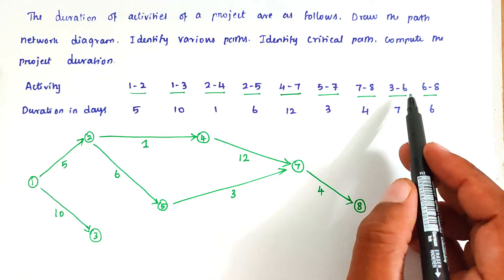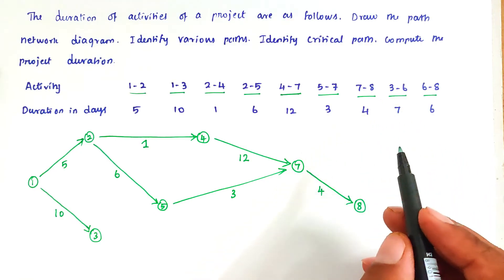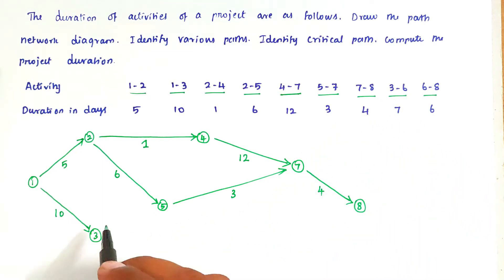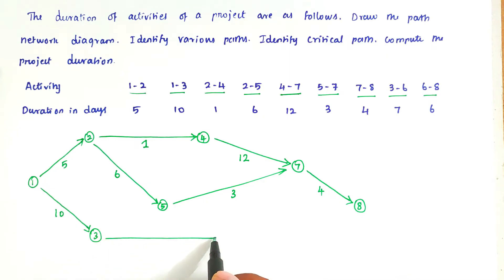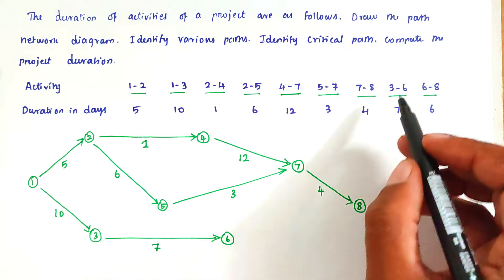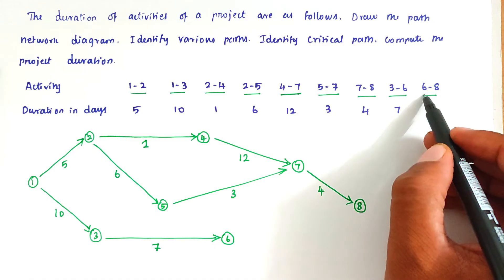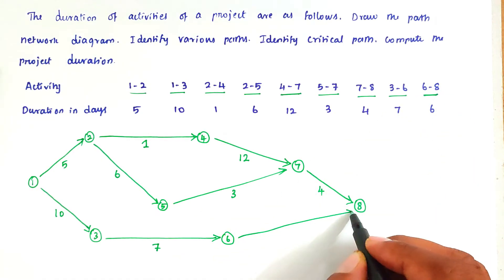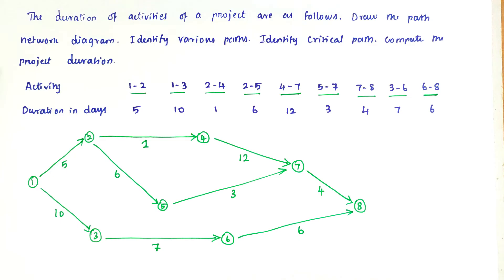Next, activity 3 to 6. So we can draw 3 to 6. The duration of 3-6 is 7. Next, 6 to 8 — the duration of 6-8 is 6.